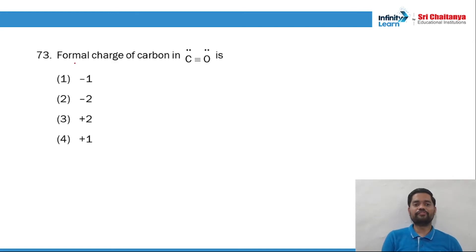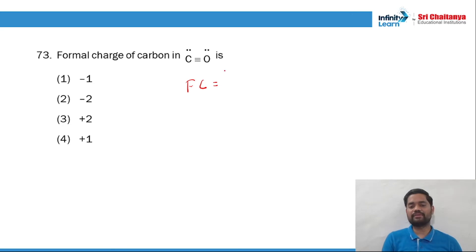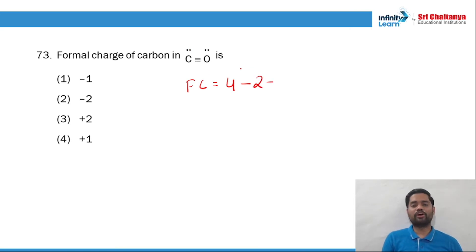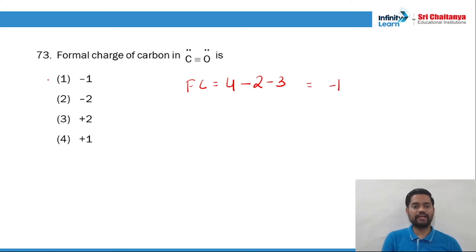Question 73: the formal charge on carbon. Formal charge = valence electrons − lone pair electrons − (1/2 × bond pair electrons). Carbon has 4 valence electrons, lone pair is 2, bond pair electrons is 3 (shared bonds). So formal charge = 4 − 2 − 3 = −1. Option 1 is the right answer.